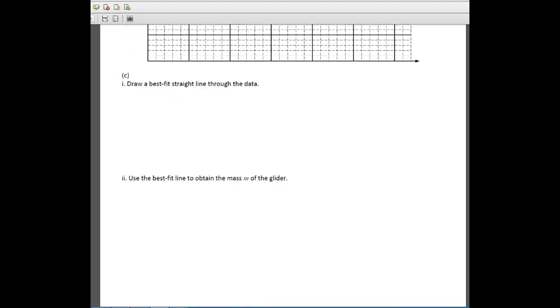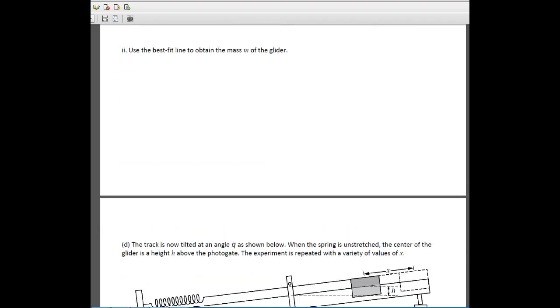For the next part of the problem, they want us to use the best fit line to obtain the mass of the glider. So this part confuses people. I think once you see it, it'll make sense, but until you see it, it's a little bit weird. We know that when we did the plot, we first started with 1 half mv squared is equal to 1 half kx squared. So we were looking at the kinetic and the potential energy. If we reduce this down, if we get rid of the halves, and we solve this for v squared.